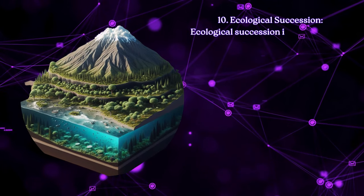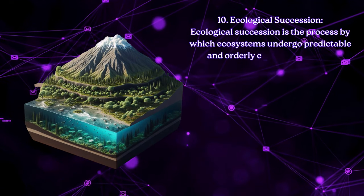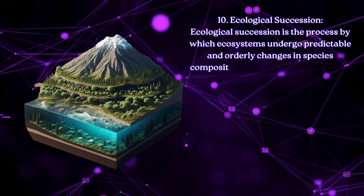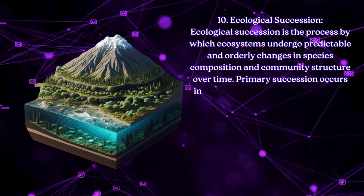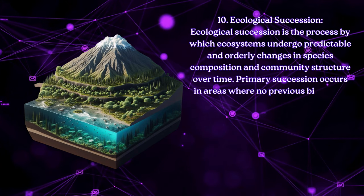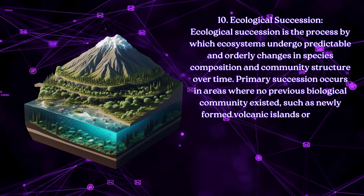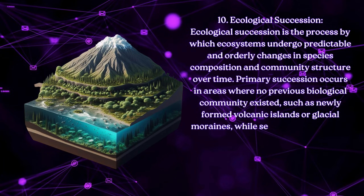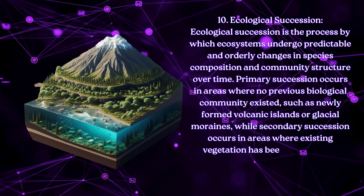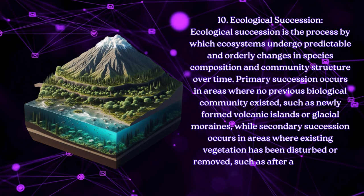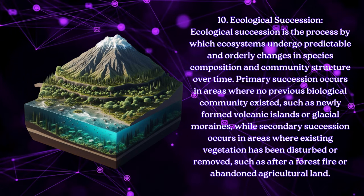Ecological succession is the process by which ecosystems undergo predictable and orderly changes in species composition and community structure over time. Primary succession occurs in areas where no previous biological community existed, such as newly formed volcanic islands or glacial moraines, while secondary succession occurs in areas where existing vegetation has been disturbed or removed, such as after a forest fire or abandoned agricultural land.